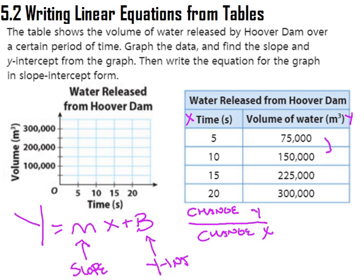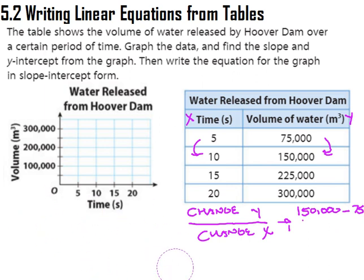To find the slope, we want to find the change in y divided by the change in x. I want to figure out how much is my y changing, how much is my x changing. The way we figure out the amount of change is we're really just doing subtraction. I'm taking 150,000 and I am subtracting 75,000. If I do 150,000 minus 75,000, I'm going to get 75,000.